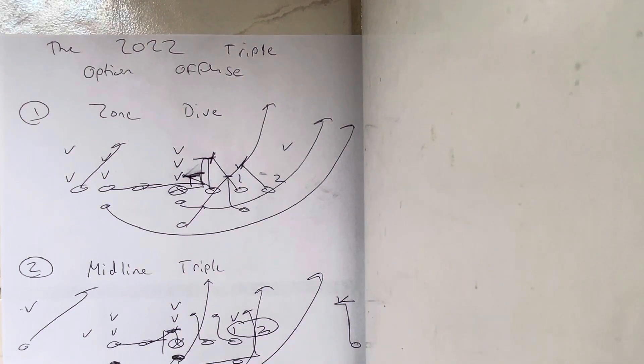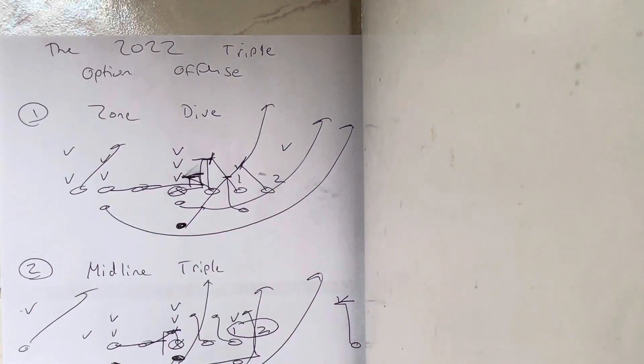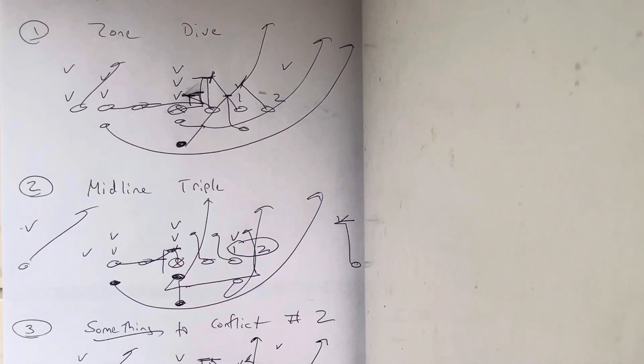So, the zone dive is basically how the offense is run. They run that more than anything else. It's not even close. Now, how they go from there. If they don't get four yards on the zone dive.